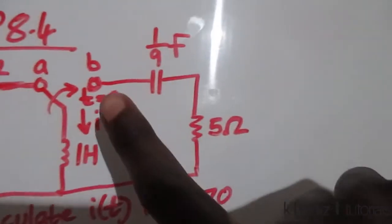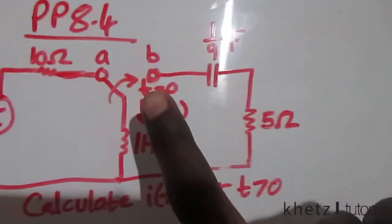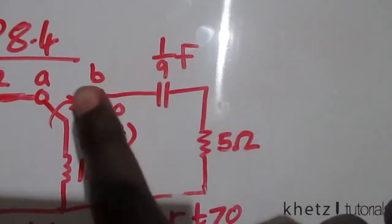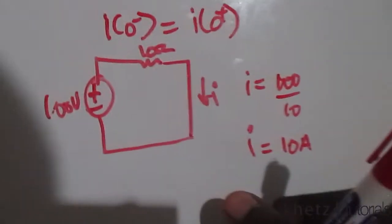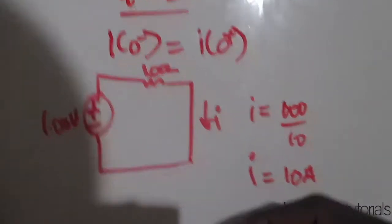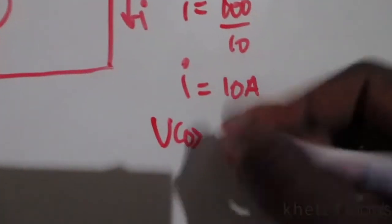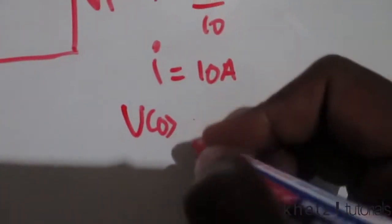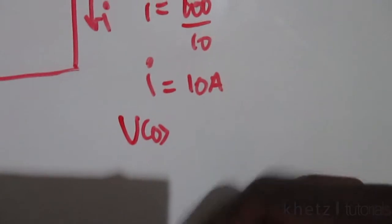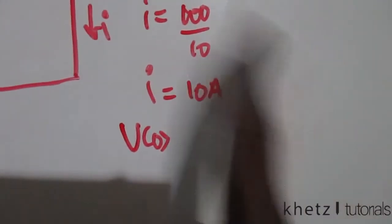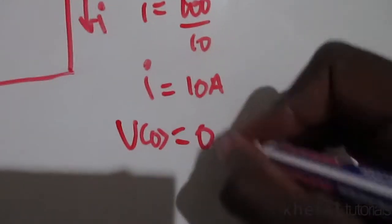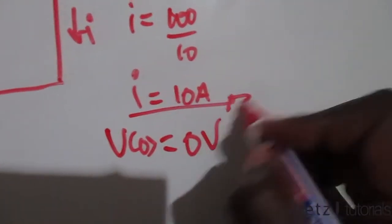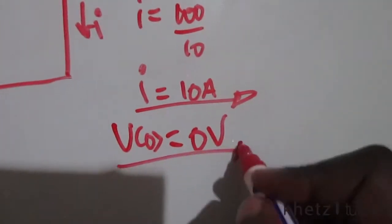Now let's look at the capacitor voltage v. Since for time less than zero the capacitor isn't connected, we conclude that v(0⁻) equals v(0⁺) equals zero volts. So our two initial conditions are: i(0) = 10 A and v(0) = 0 V.